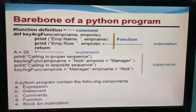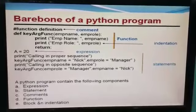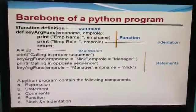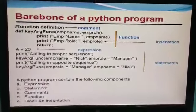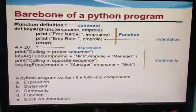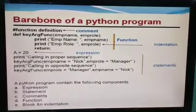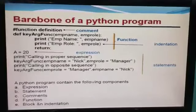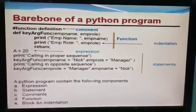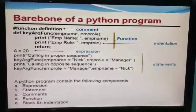Expressions — whenever we initialize any variable, or perform some kind of mathematical, logical, or relational operation, that is called an expression. For example, if we write a equals b plus c, or after doing b plus c we save the value in a variable, that is called an expression. In an expression, we can always use an equal sign.